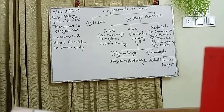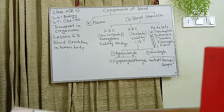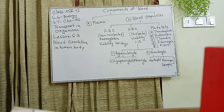Hello class 10 English version students. In the previous class I explained our new chapter 6, Transport in Organisms, and drew a plant circulation diagram. Today I will give you lesson 6.3, a new topic. This topic's name is Blood Circulation in the Human Body. I will explain the concept of transformation in the human body and the function of the components of blood.